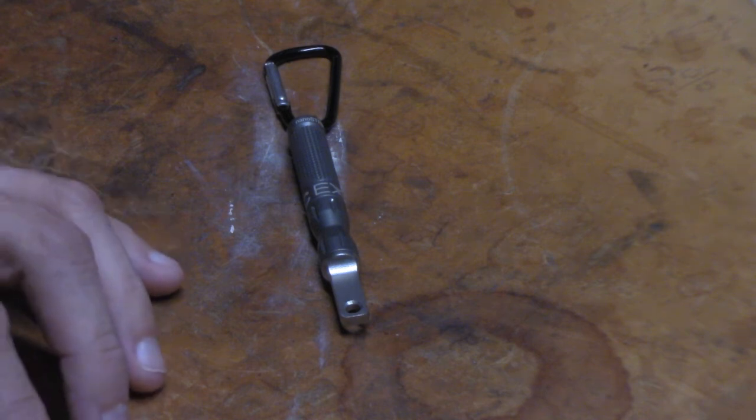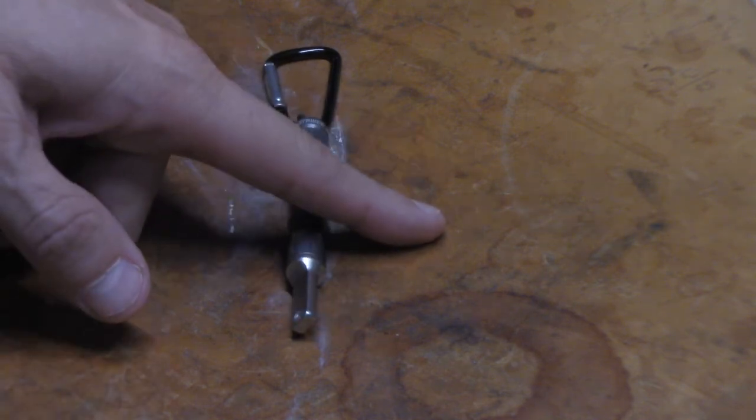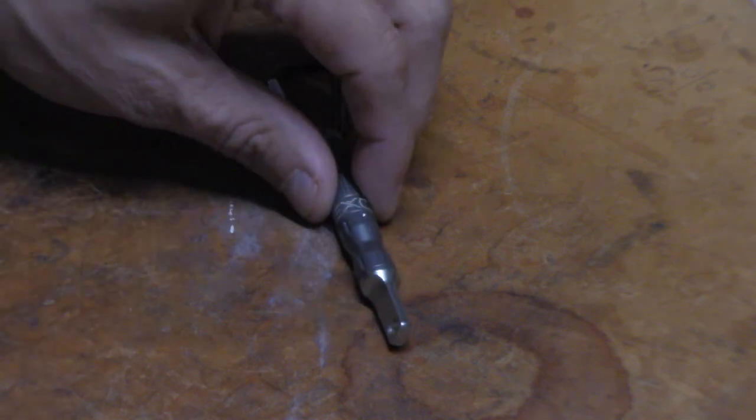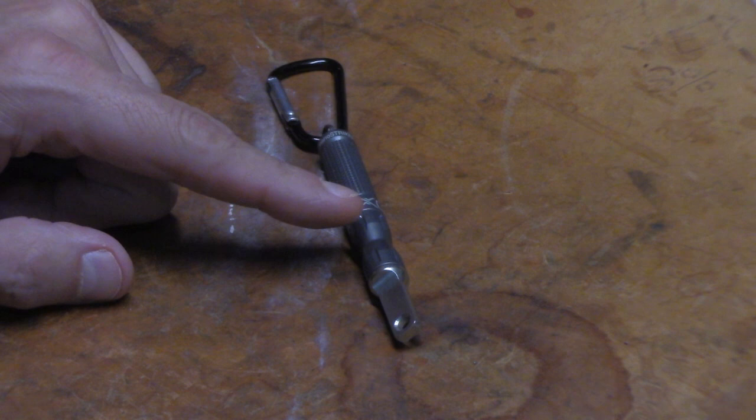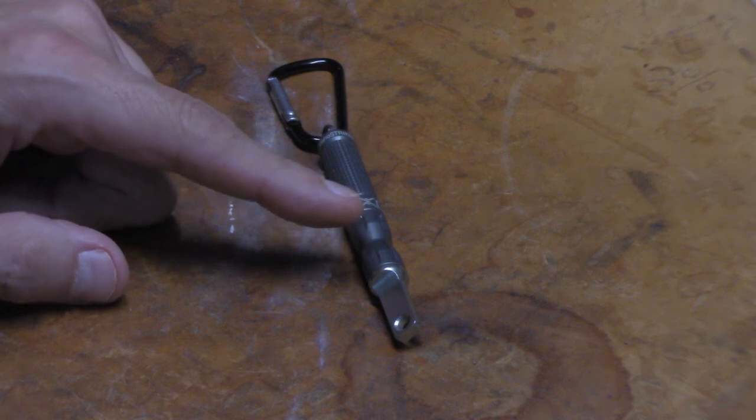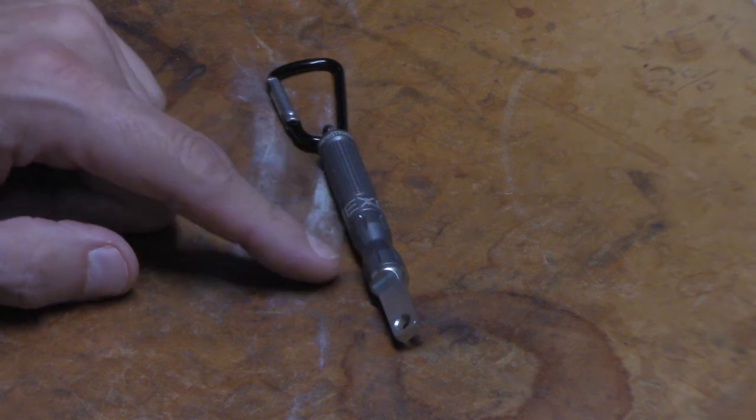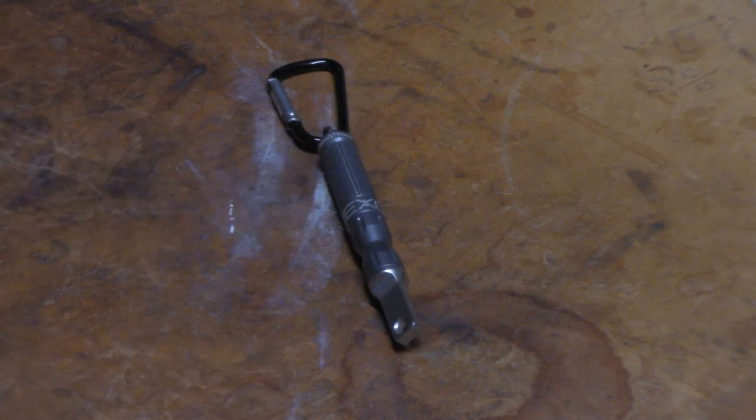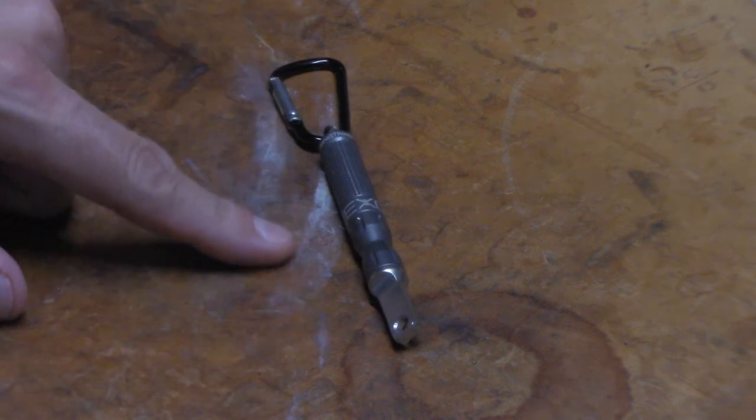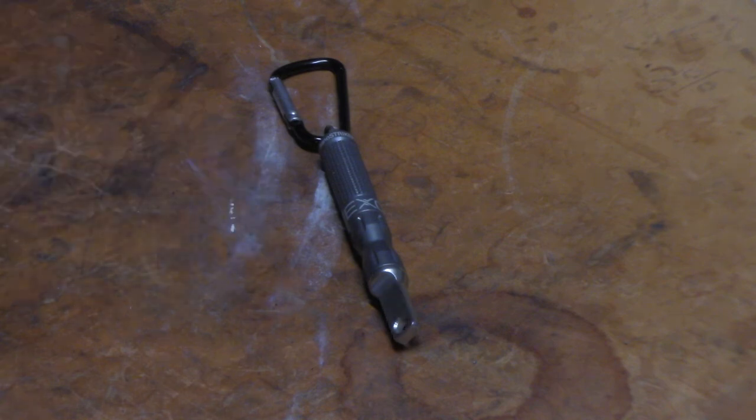Comes in four colors: gum metal that you see here, black, orange, and olive green. One ferroceium rod, quarter inch rod, guaranteed to 3,000 strikes. The rod is replaceable. Body itself is 6160 aluminum. And the best part about this bad boy, she was made right here in the United States of America.